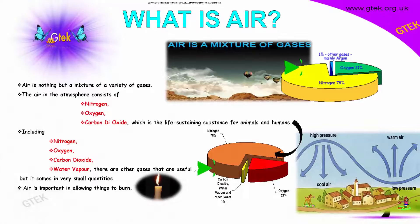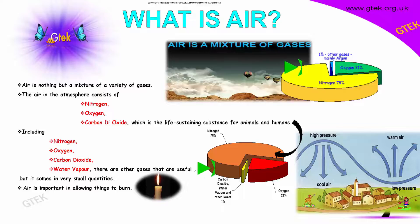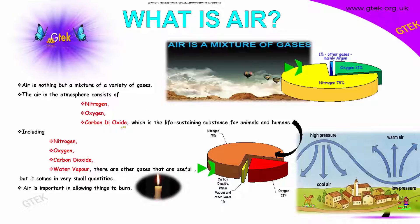What is air? Air is nothing but a mixture of a variety of gases. The air in the atmosphere consists of varieties of gases like nitrogen, oxygen, and also carbon dioxide, which is described as a life-sustaining substance for animals and humans.